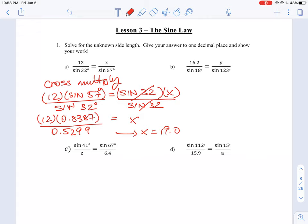If you're faced with a similar question where they put the variable on the bottom like in question c, you just do it exactly the same way. So we cross multiply this so we'll have 6.4 times sine 41 degrees is equal to z times sine of 67 degrees, and again just divide out the sine of 67.